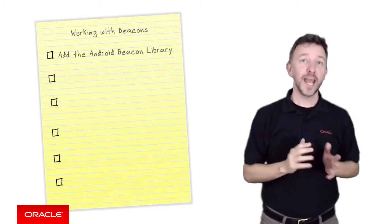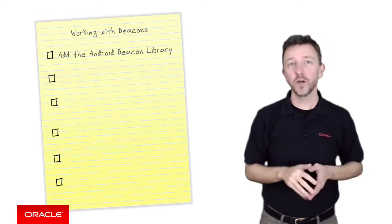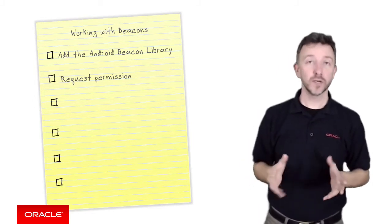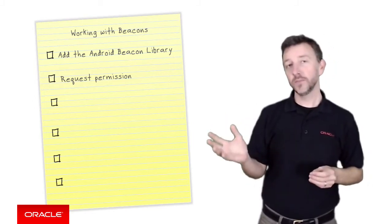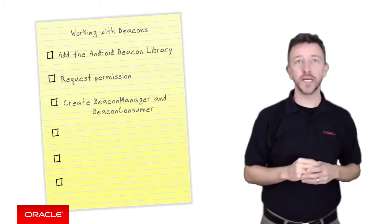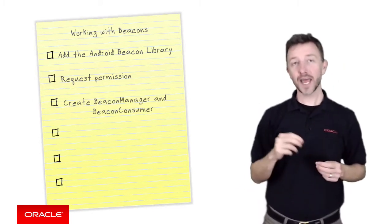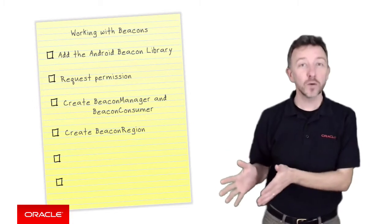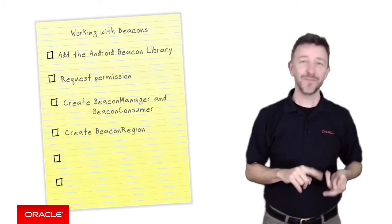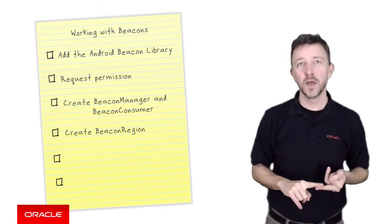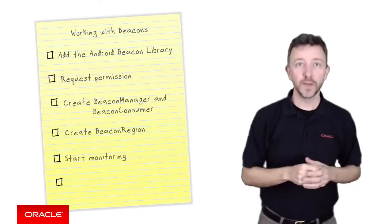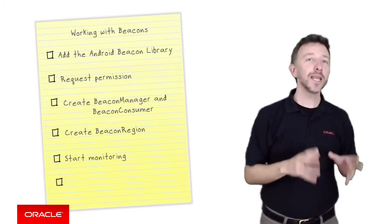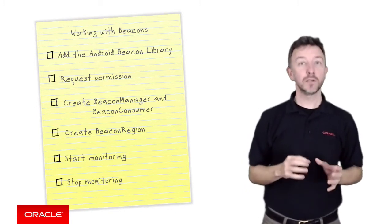First, we need to add the Android beacon library, the third-party library, to our project. Next, we need to request permissions to use Bluetooth and location services in our Android application. Then, from the Android beacon library, we need to define a beacon manager object and a beacon consumer implementation to handle the beacon events raised during the life of the application. We then create a beacon region object with the beacon UUID, major and minor identifiers we wish to listen for. We then start monitoring for the beacons, which will raise beacon events that our beacon consumer will act upon. And finally, at some later point to save battery life, we need to stop monitoring for the beacons too.